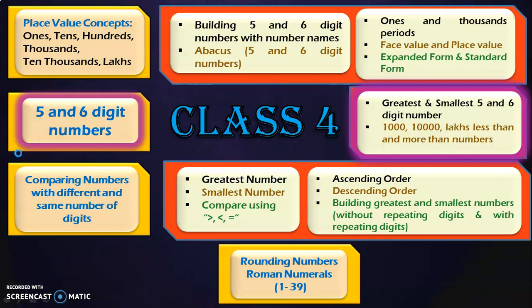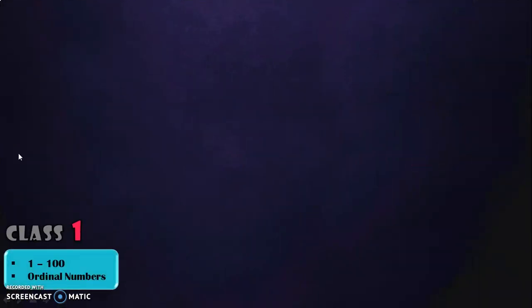Before we write the greatest and smallest 5 and 6 digit numbers, let us see the evolution ladder of numbers from class 1. This is what I try to do in my channel — I give you a link to show how we have evolved concept-wise and in complexity from class 1 to class 5. Since we are dealing with concept numbers here, I have shown you the evolution ladder of concept numbers.